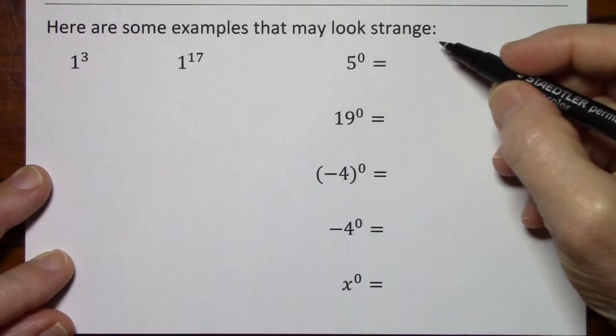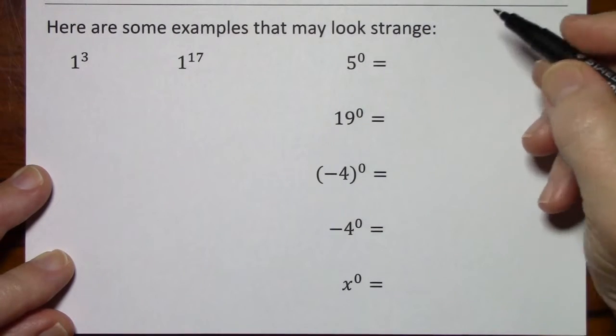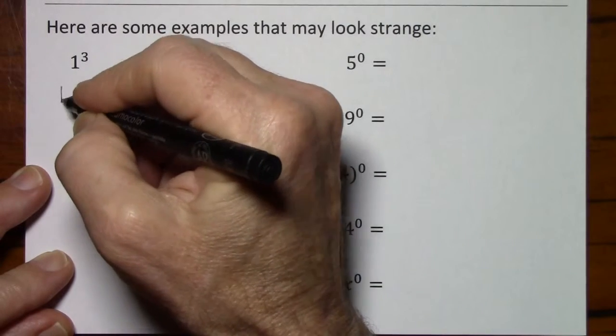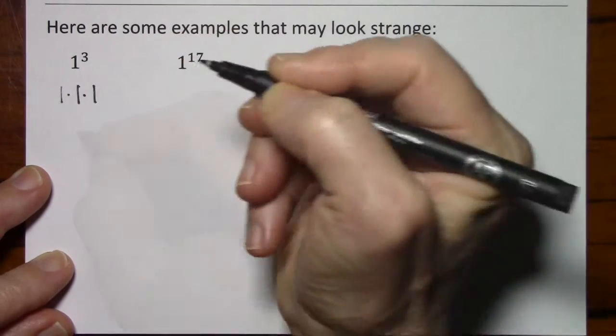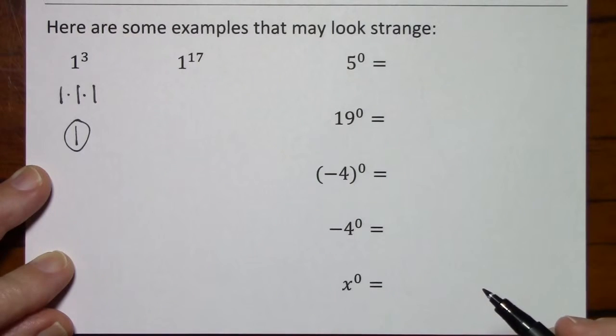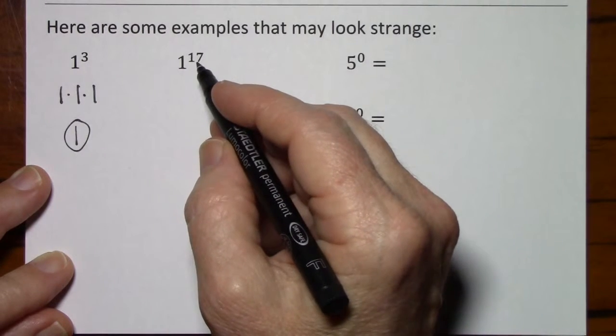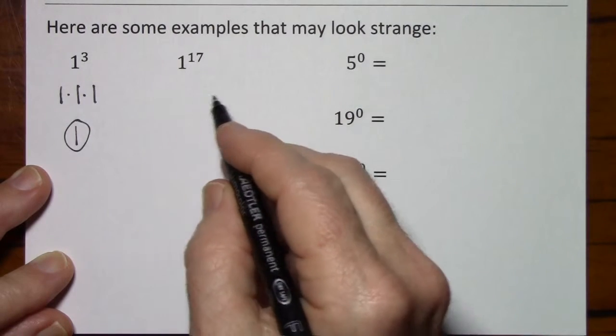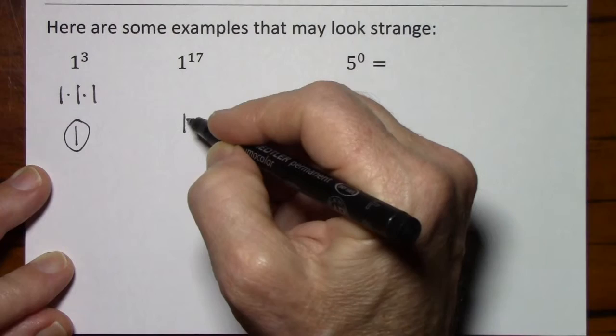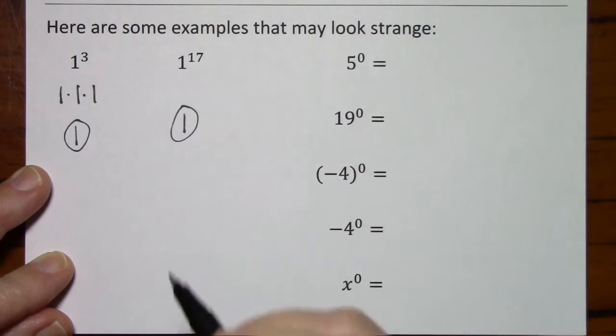I'd like to go over some examples that may look strange. 1 to the 3rd, well this means 1 times 1 times 1, so obviously that's equal to 1. Even if you have something like 1 to the 17th, I'm not going to write the factored form, but if I'm asked to evaluate or simplify, I'm going to put a 1.